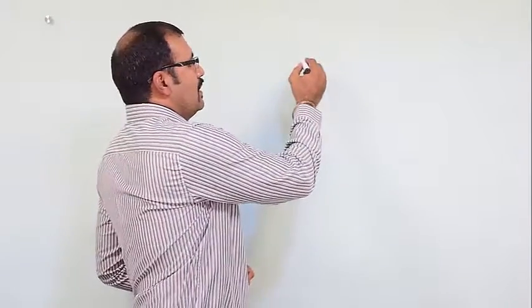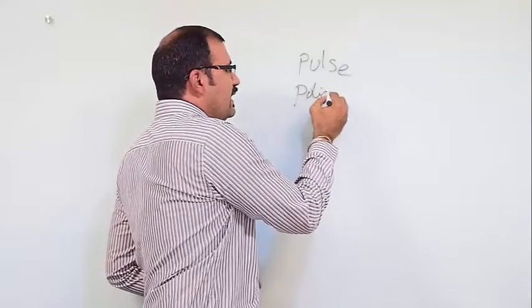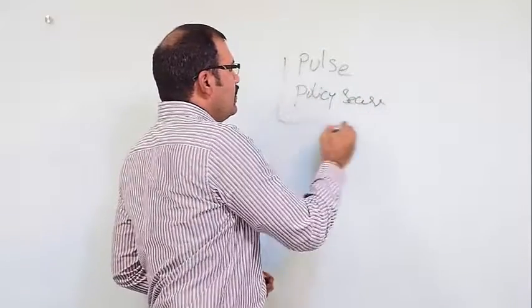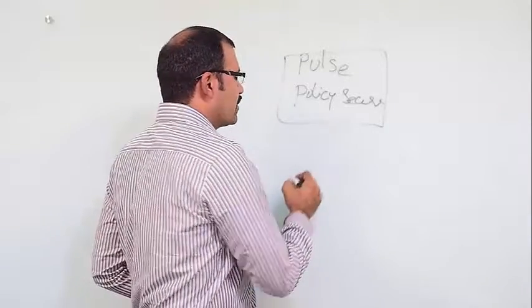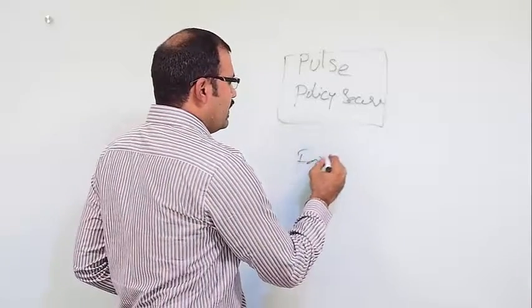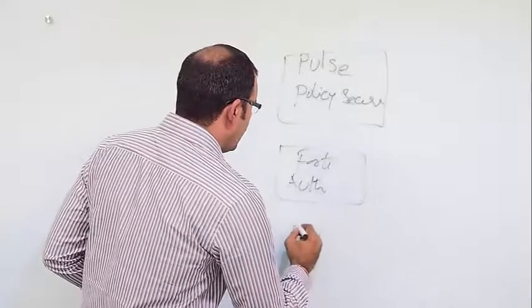First, let's look at what is the solution provided by integrating with Fortinet firewall. In order to deliver an intelligent layer 3 network access control, our Pulse Policy Secure will be deployed in combination with Fortinet products such as Fortinet Authenticator and Fortinet firewall.